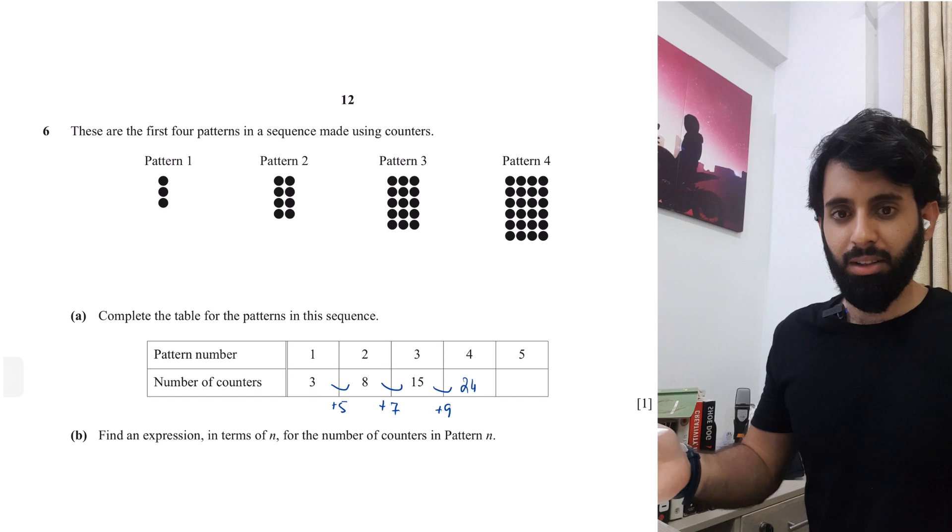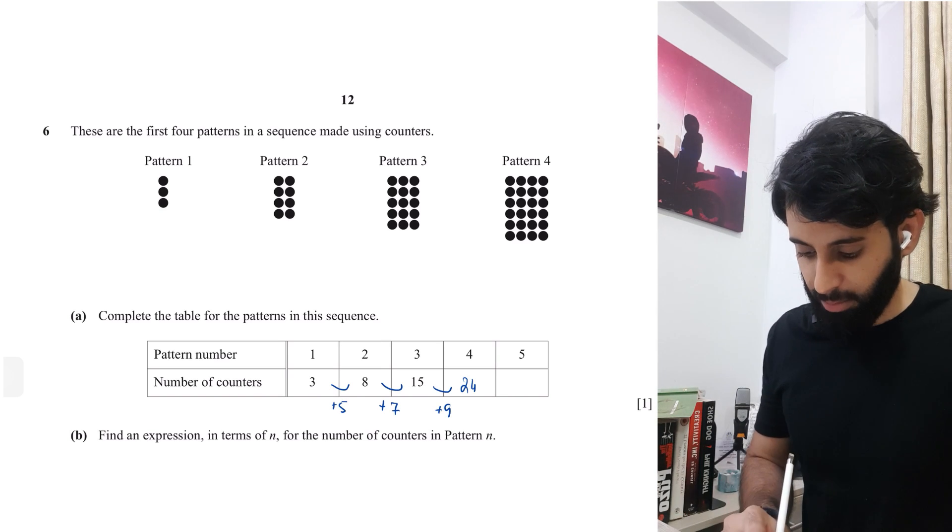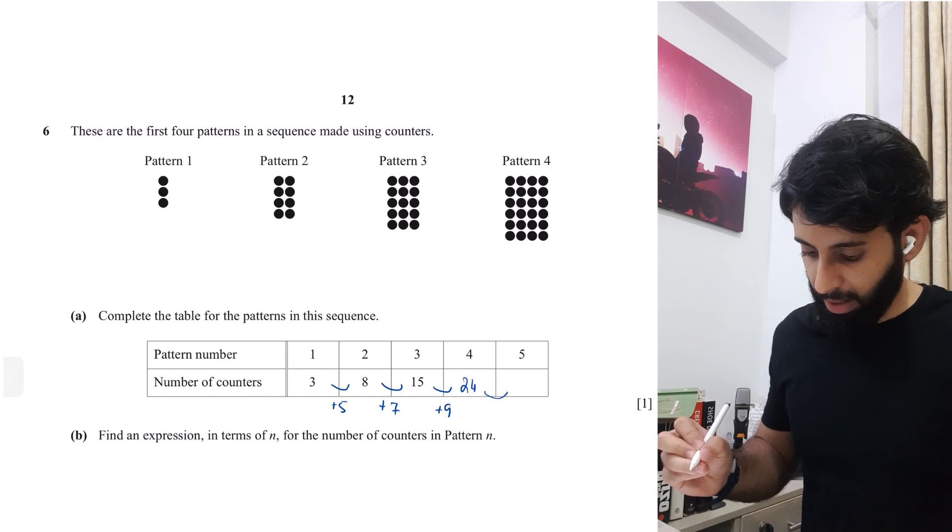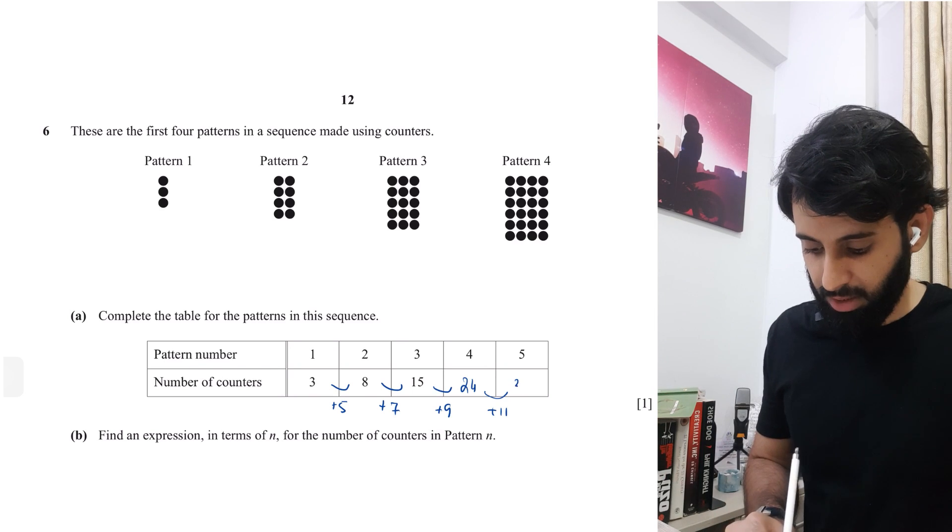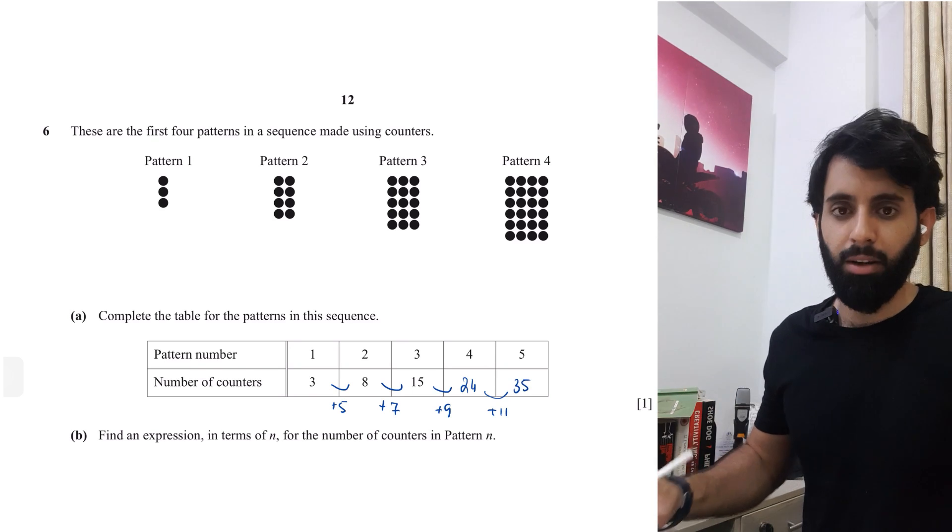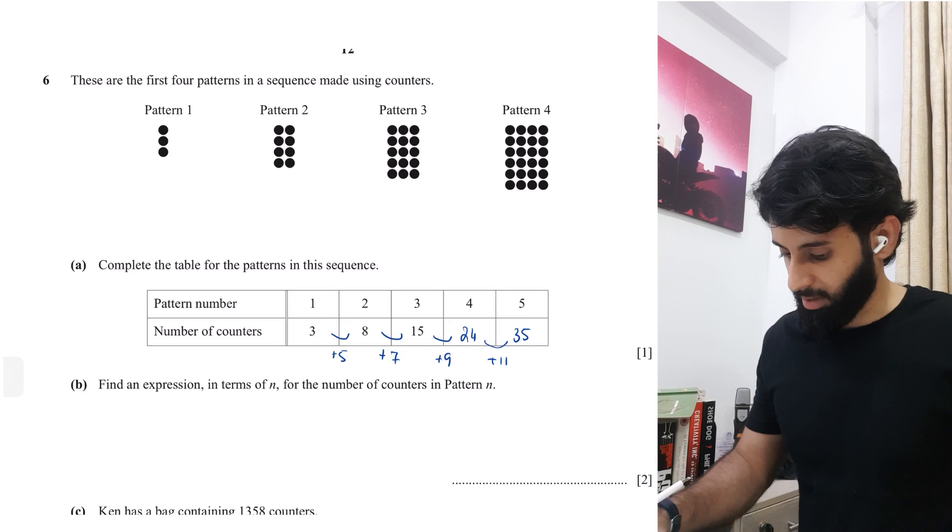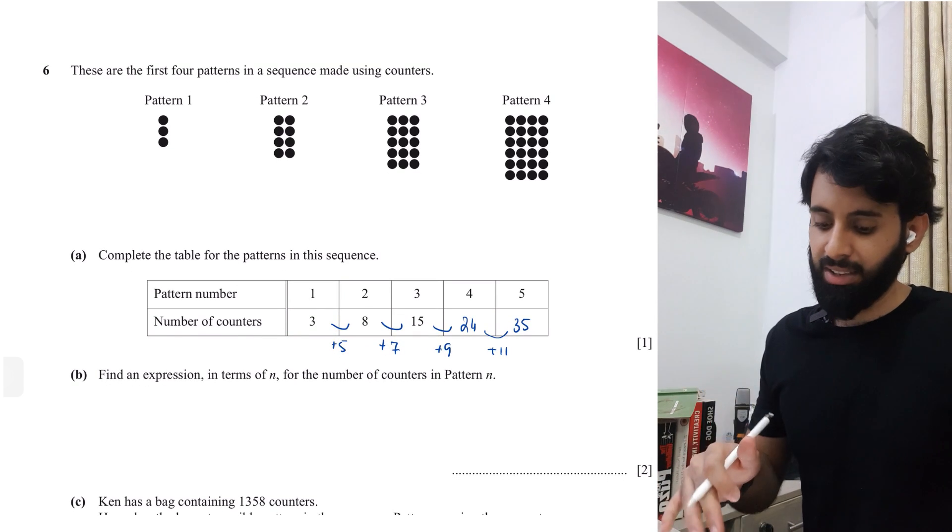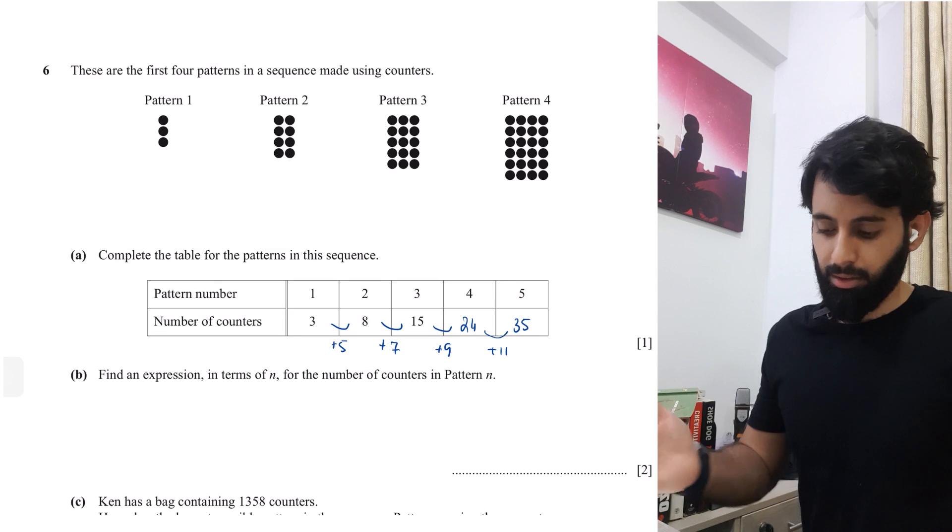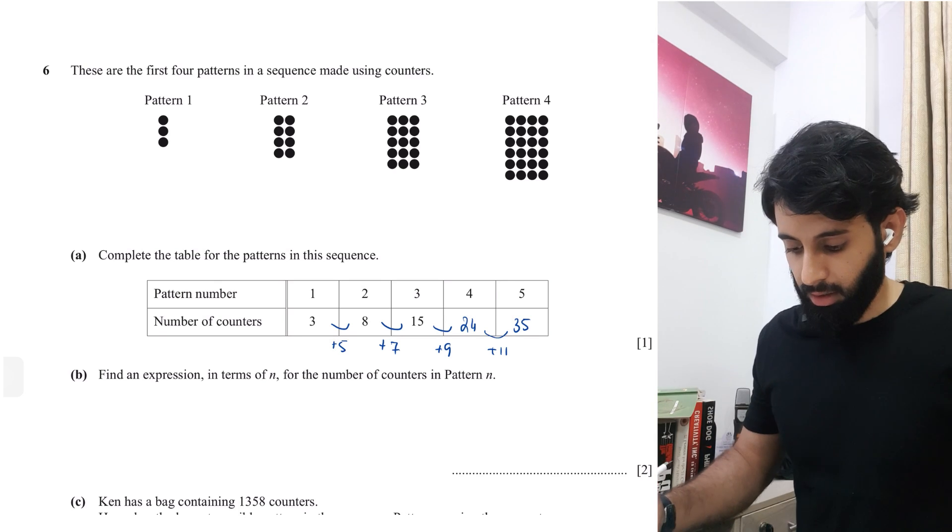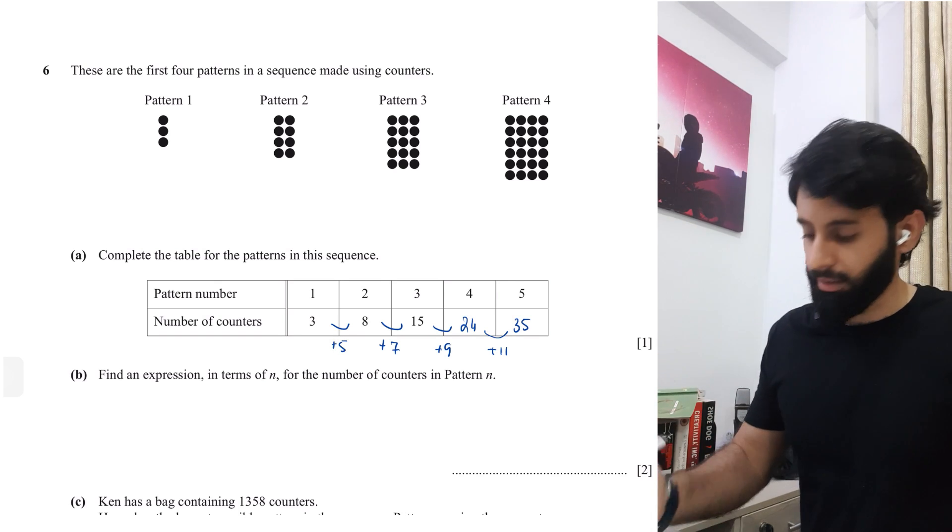So that means if I want to find out the number of patterns in pattern number five, I'll simply add 11. So 24 plus 11 is equal to 35. So one mark, pretty simple. And one mark questions need to be exactly right. For example, if you did one of the two right, then you can't get any marks since there's no 0.5 in CIE.